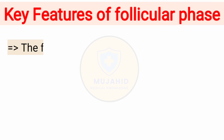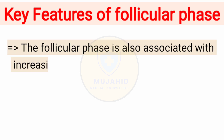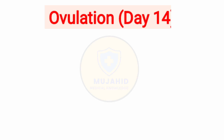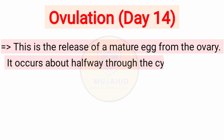The follicular phase is also associated with increasing energy, improved mood, and more fertile cervical mucus. Ovulation, Day 14: in a 28-day cycle, this is the release of a mature egg from the ovary.